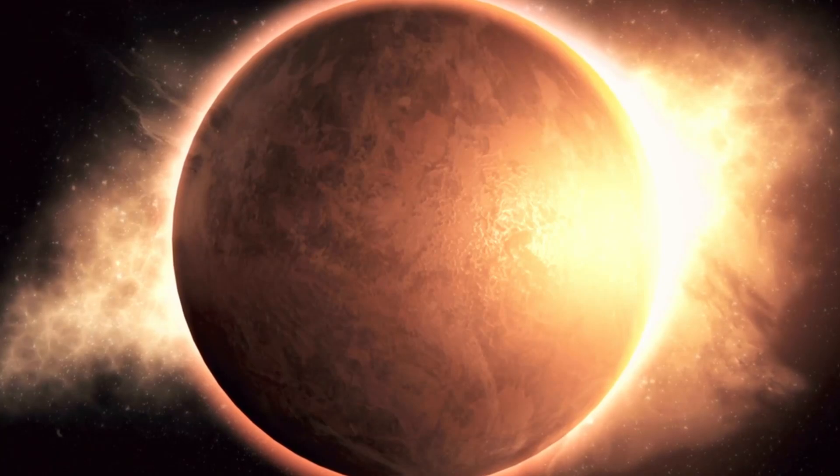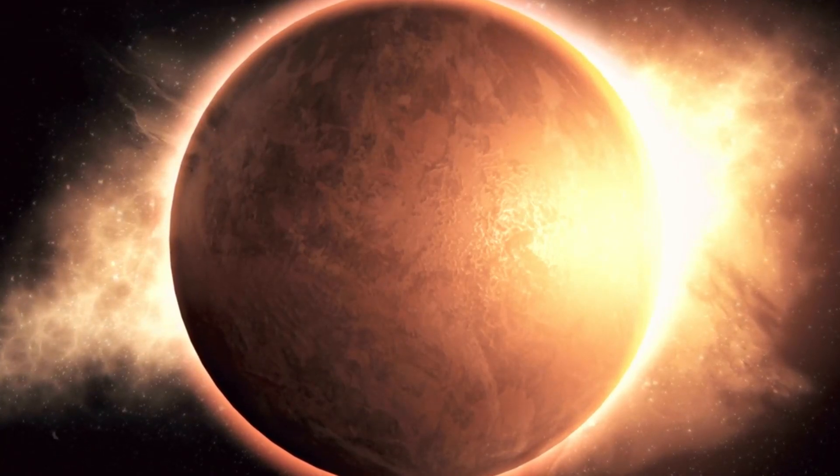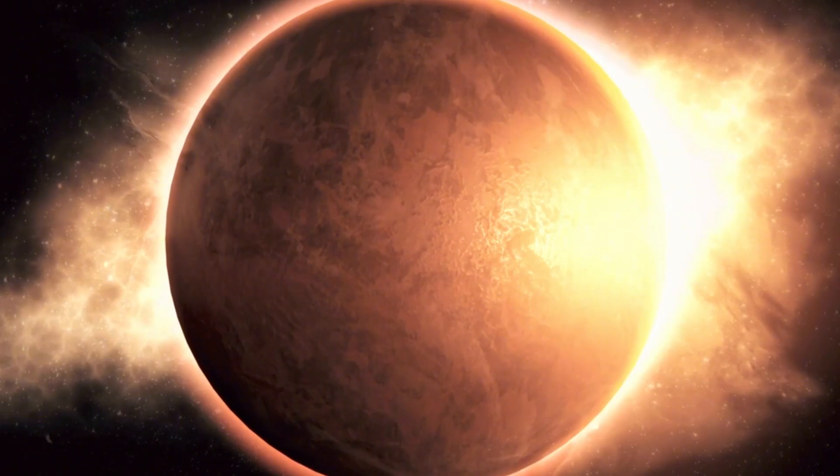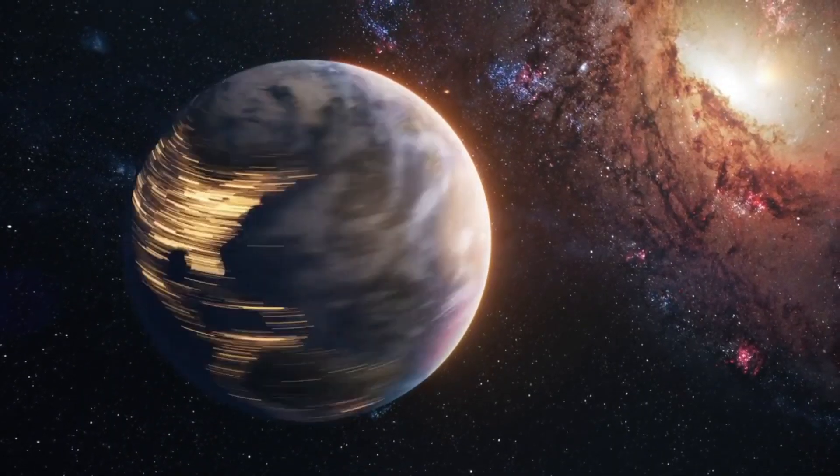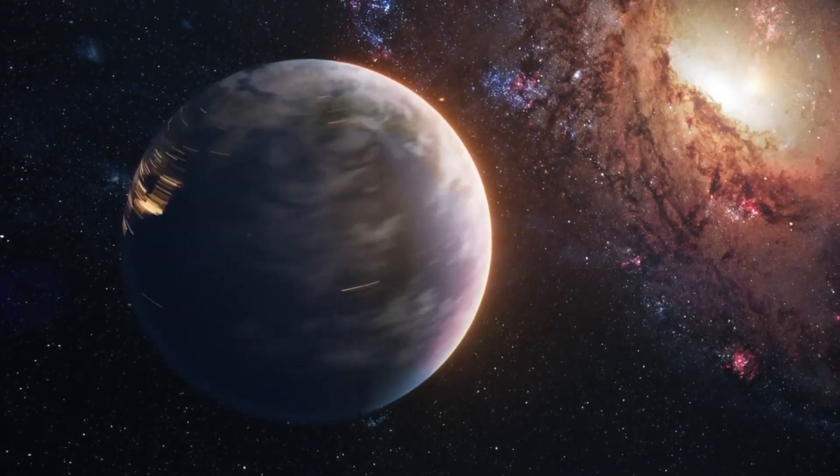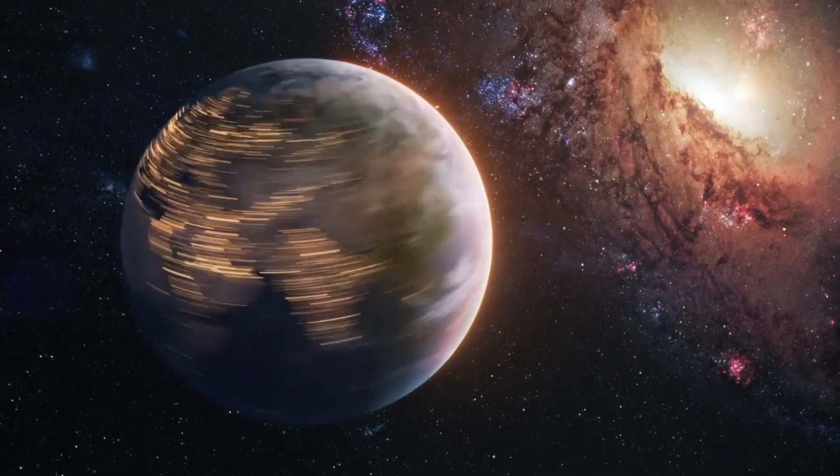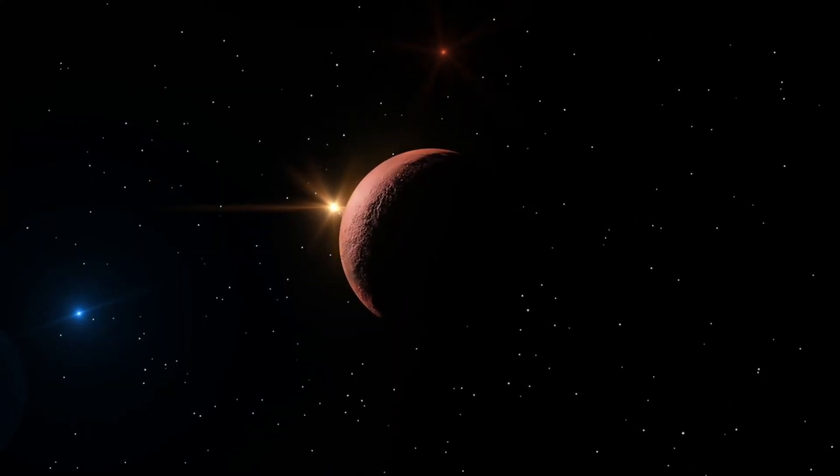Furthermore, let's not forget terrestrial exoplanets, those that resemble our own Earth. These planets come in various sizes, from smaller than Earth to twice its size. There are also super-Earths, which have masses greater than twice that of our planet but are lighter than Neptune.